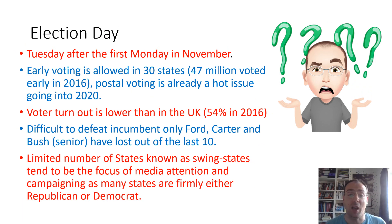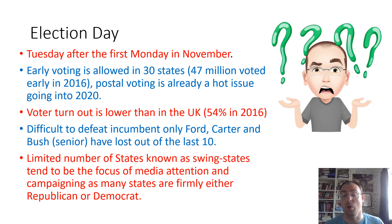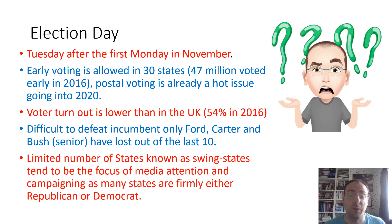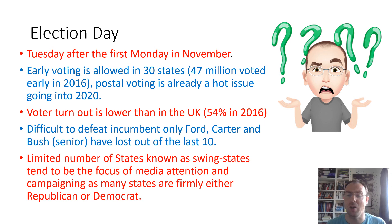On election day — the Tuesday after the first Monday in November — early voting is allowed in a majority of states, about 30 states, and in 2016, 47 million votes were cast early. Postal voting is also used, but this is going to be a really hot issue going into 2020, with Trump having said on various occasions — though without supporting evidence — that it's going to lead to voter fraud, possibly setting himself up with an excuse to challenge the electoral result. Voter turnout is generally lower than in the UK — it was 54% in 2016. It is difficult to defeat an incumbent: only three of the last ten — Ford, Carter, and Bush Senior — lost out as incumbents, and they all generally had something that went fairly horrendously wrong.